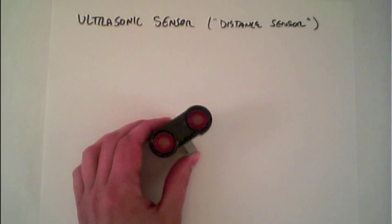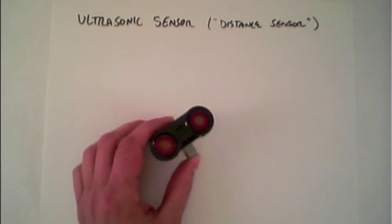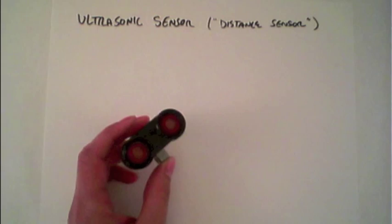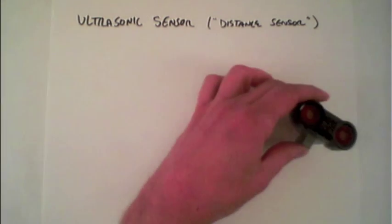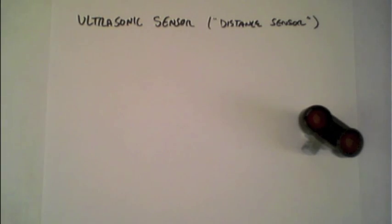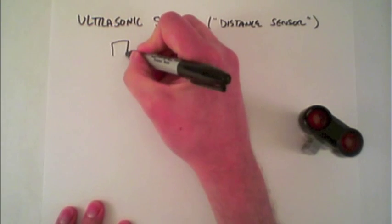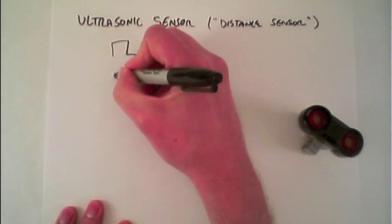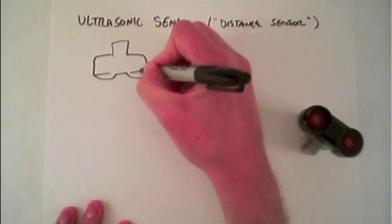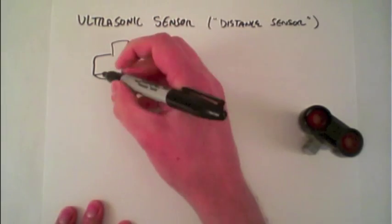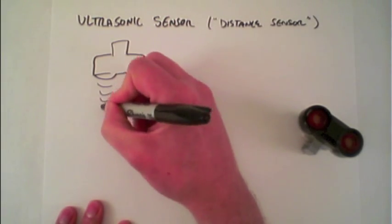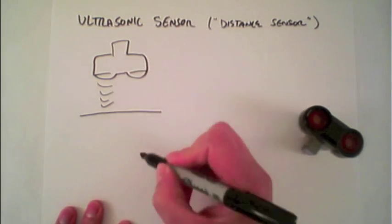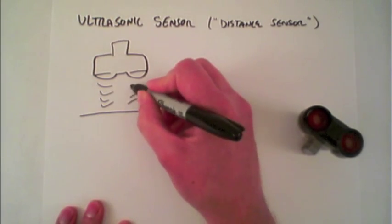The ultrasonic sensor is sometimes called the distance sensor because while it uses ultrasonic waves to function, its main purpose is often for measuring distance. The way it works is that it sends out ultrasonic pulses that reflect off of some surface and bounce back.